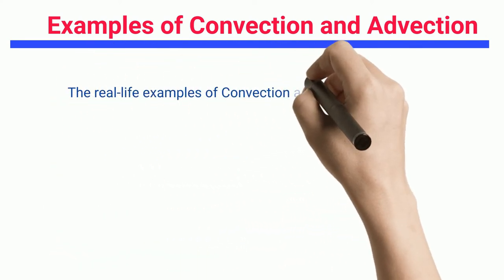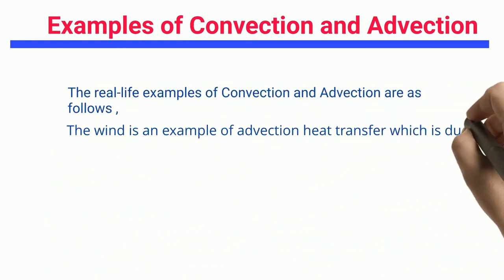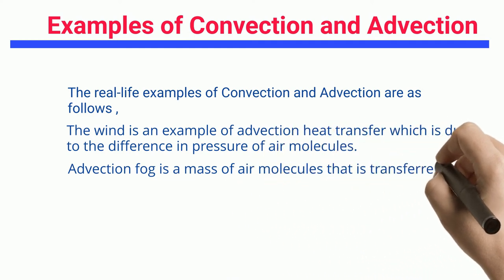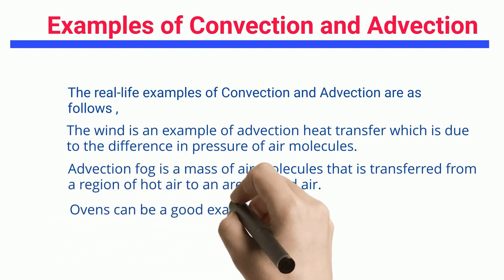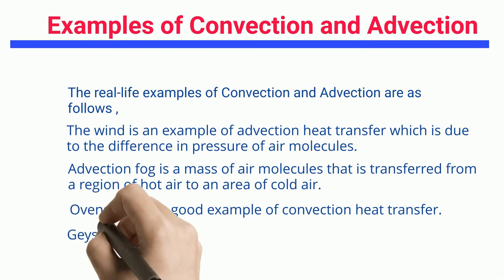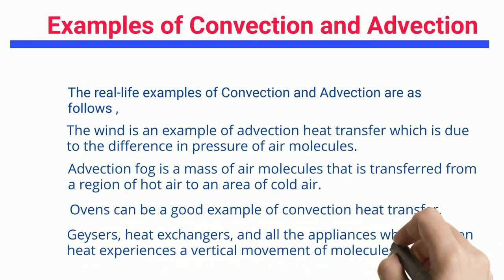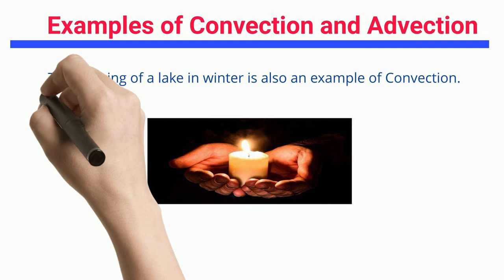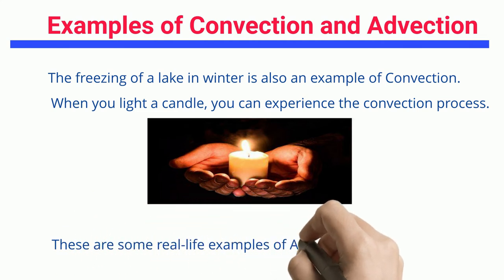Examples of convection and advection. Real-life examples include: Wind, which is an example of advection heat transfer due to the difference in pressure of air molecules. Advection fog is a mass of air molecules transferred from a region of hot air to an area of cold air. Ovens are a good example of convection heat transfer. Geysers, heat exchangers, and all appliances which work on heat experience vertical movement of molecules — i.e., convection. The freezing of a lake in winter and lighting a candle are also examples of convection.